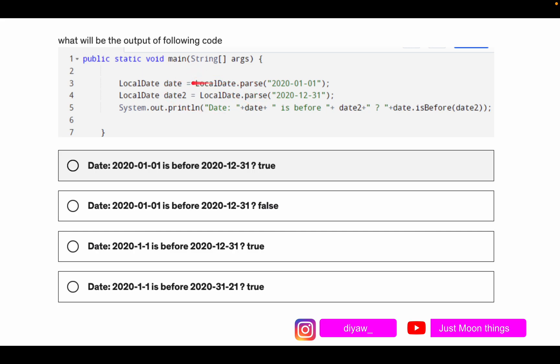Then is before date2 question mark, date dot is before date2. So over here we will understand this one by one. In this case, date is before date2 will give us a boolean value. If the condition is true it will return true, and if the condition is false it will return false.